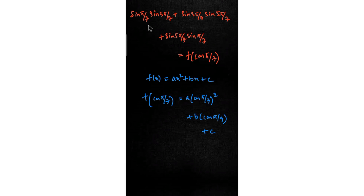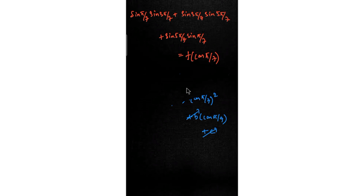My plan is to convert the left-hand side of the equation into cos(π/7) form so it can be equated to the right-hand side. Once I do that, I can find the values of a, b, and c, and thereby determine the exact quadratic equation.